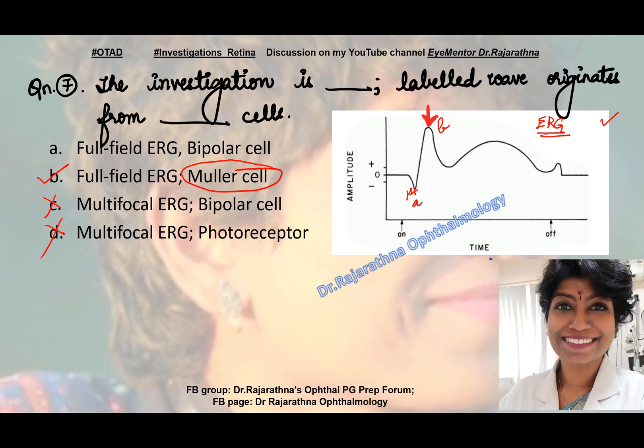The B wave arises from Muller cells at the level of the bipolar cell — where the Muller cell and the bipolar cell communicate with each other, that's the area the B wave is generated. The correct answer is Muller cell, because the question asks for where it originates. This is what most textbooks talk about.